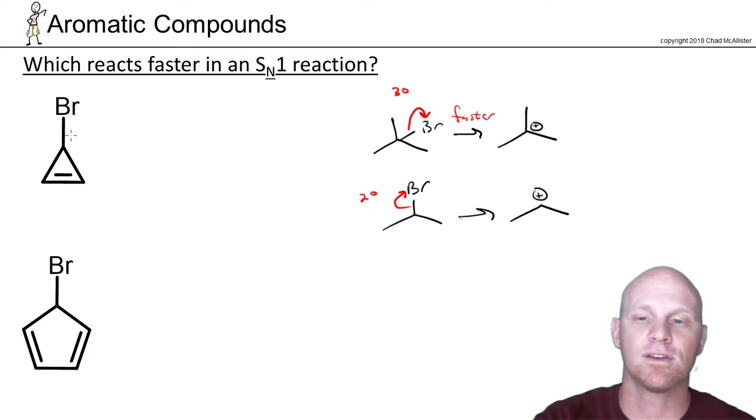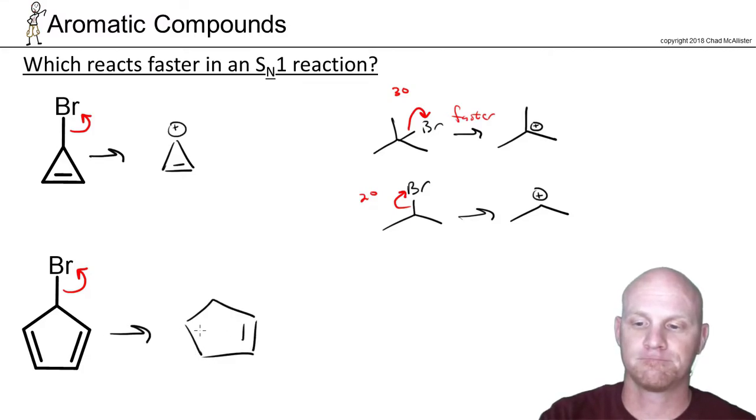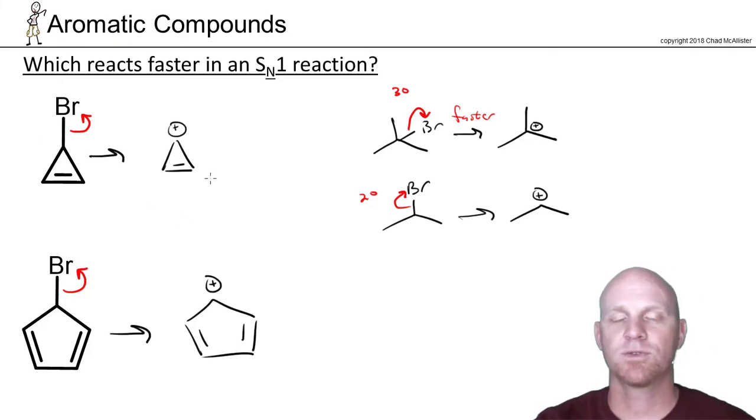That's going to be the same case here, but now it's going to apply to aromaticity. If we're doing SN1, the first thing that would happen is the leaving group would leave. In the top example here we'd end up with this carbocation, and in the bottom example we'd end up with this carbocation. The question really comes down to: are either of these aromatic or anti-aromatic? That could either make it faster or slower.